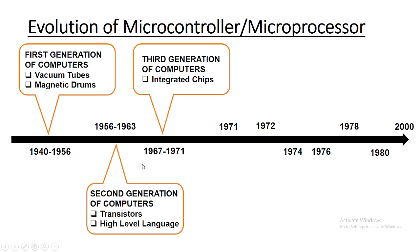In the third generation of computers, starting from 1967, the development of the integrated circuit was the hallmark. Transistors were further miniaturized and placed on silicon chips — semiconductors — which drastically increased the speed and efficiency of computers. Integrated chips were the milestone of the third generation, and as more ICs were developed, the size of computers became smaller. This was the period when the development of the microcontroller and microprocessor began.